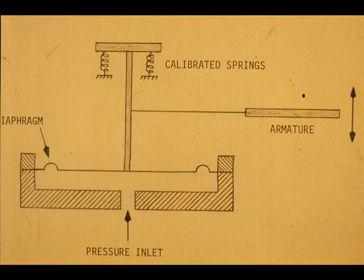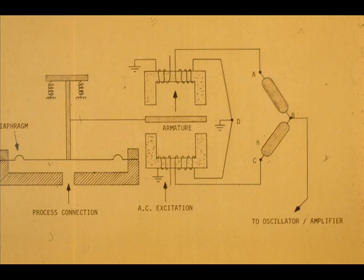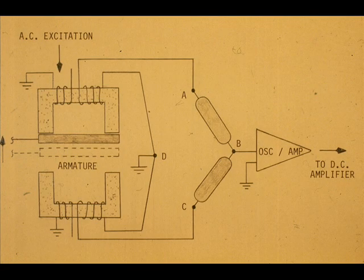An armature attached to the stem will facilitate magnetic detection of the armature position caused by any diaphragm movement. In this type transmitter, the total movement for the diaphragm and the armature is approximately 0.0025 inches for the complete range measured. An increase in pressure will move the armature upward, thus increasing the voltage at point A in the bridge ABCD. The voltage at point C will be decreased. The changes in voltage at points A and C are the result of the change in reluctance caused by the movement of the armature.